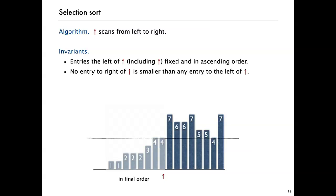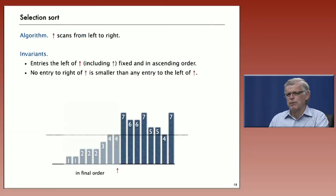One way to understand the way that an algorithm works is to think about invariants. For the selection sort, we have a pointer, that was our variable i, that scans from left to right. That's indicated by a little red arrow in this representation. The invariants are that the entries on and to the left of the arrow are never changed and they're in ascending order. No entry to the right of the arrow is smaller than any entry to the left of it. That's the way that we set it up. And the algorithm maintains those invariants by finding the smallest entry to the right and exchanging it with the next one.